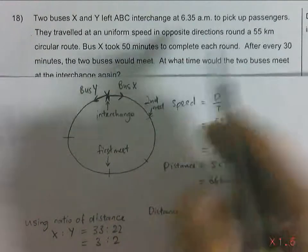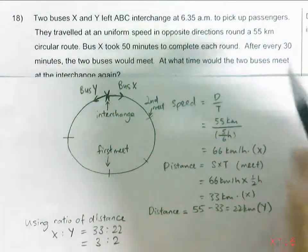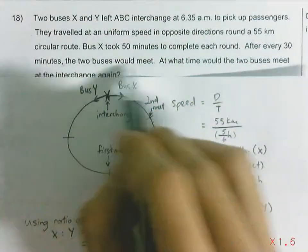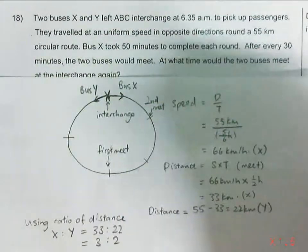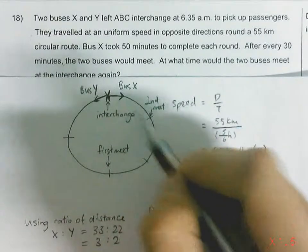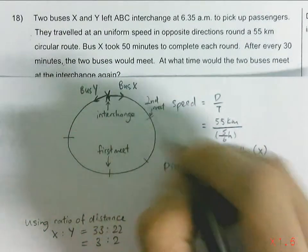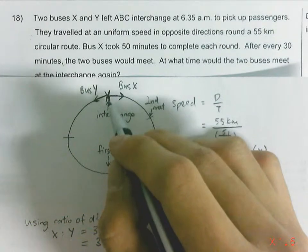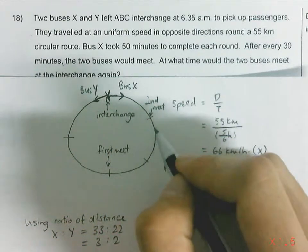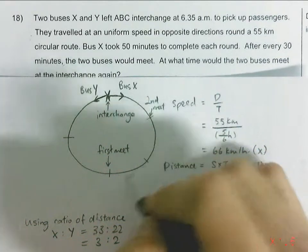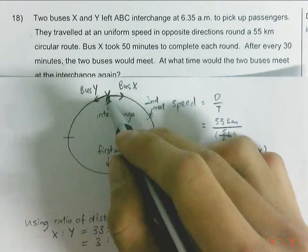So from the time that they started off, each time they meet will be 30 minutes. So it took them 5 times, or 5 meeting times, other than the interchange at the start at 6:35 am. They will meet another 5 times, and the 5th time would be at the bus interchange.